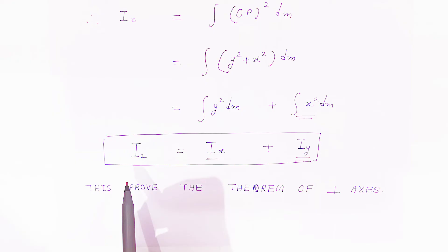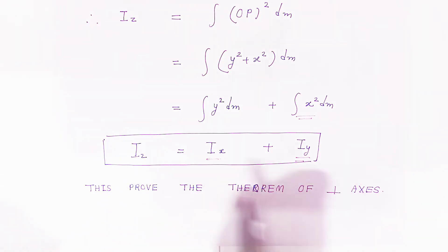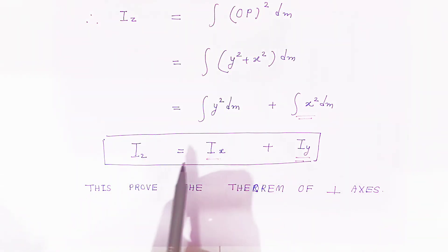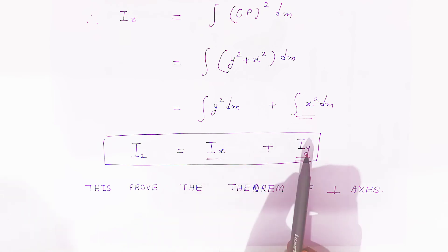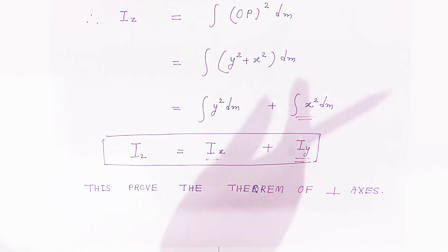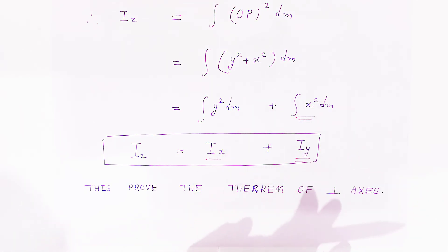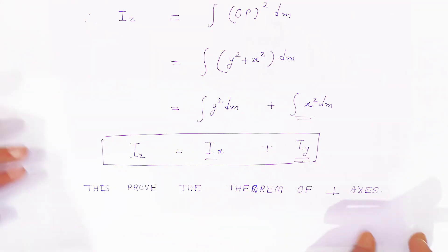So this proves the theorem of perpendicular axis: Iz equals Ix plus Iy. This is a very important theorem and many problems are based on it. If you like this video please share and subscribe. Thank you very much, God bless you.